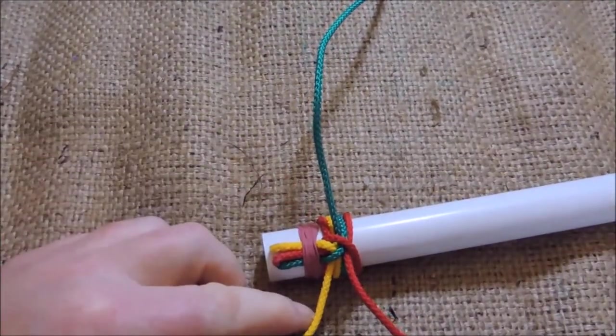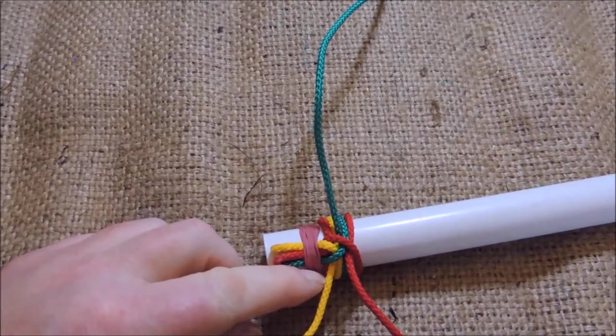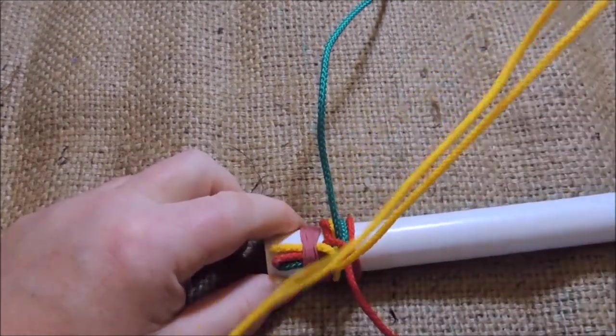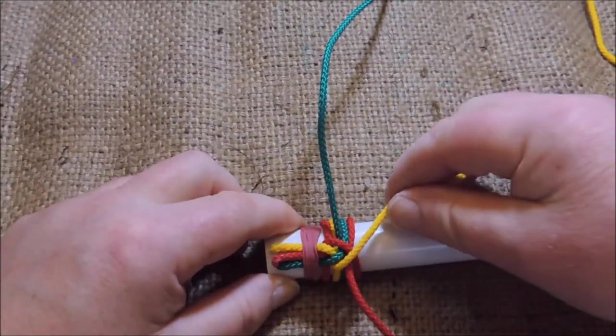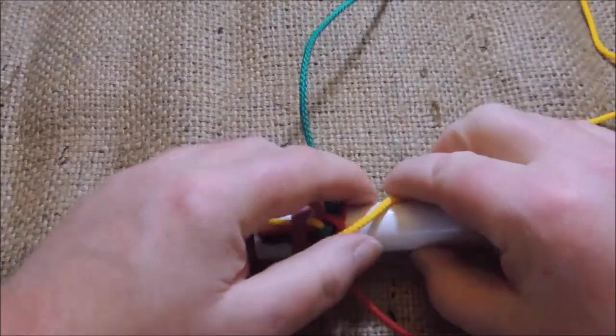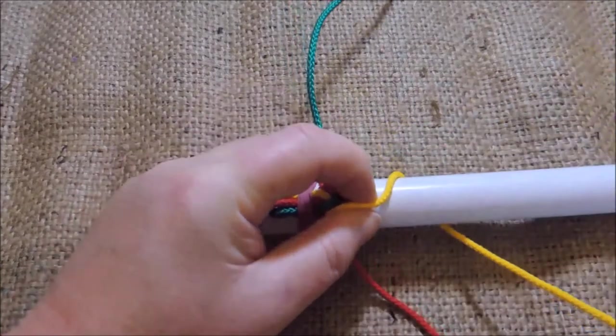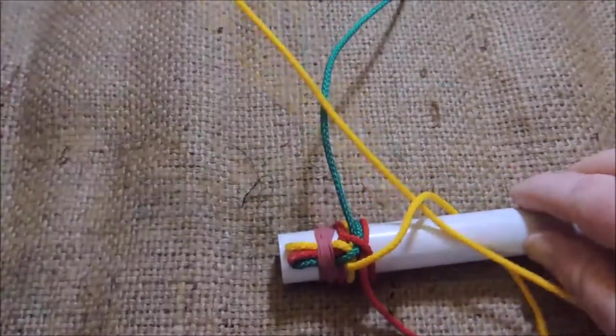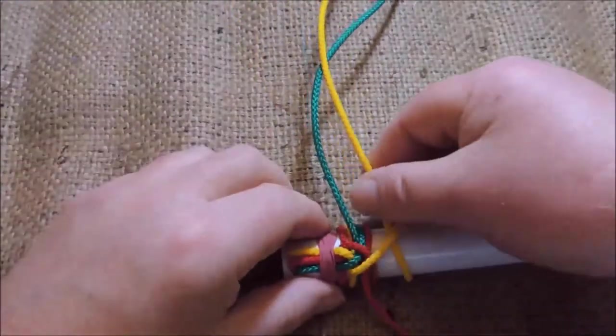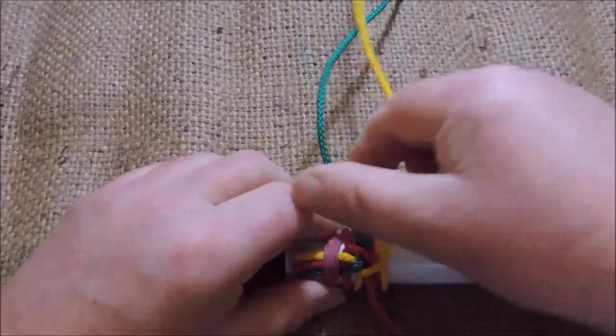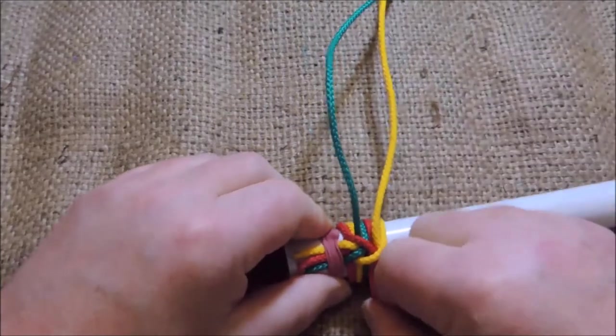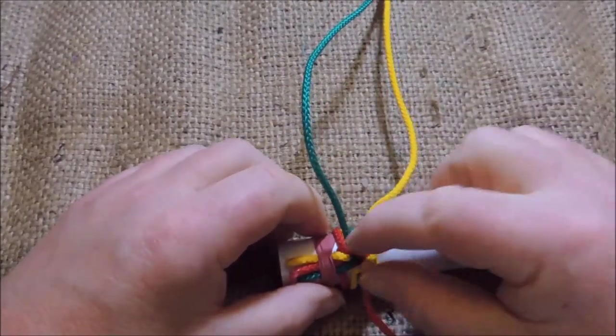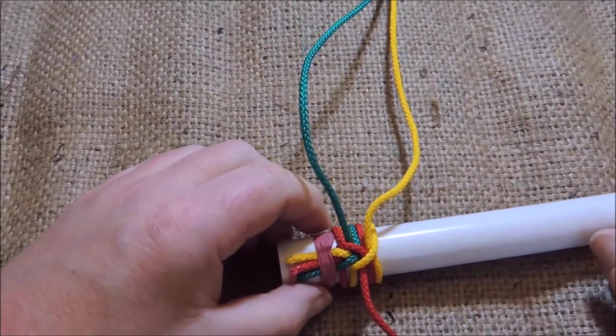OK, we then take the bottom one again, and this time, we take the bottom one, pass it over the previous one, the red one that we just did, take it round the back, take it through like so, and pull it through, and pull it tight. OK, work your way back, pulling them all tight, and you can gradually see here, that a nice V pattern is starting to form.